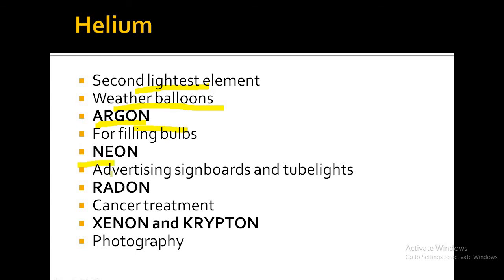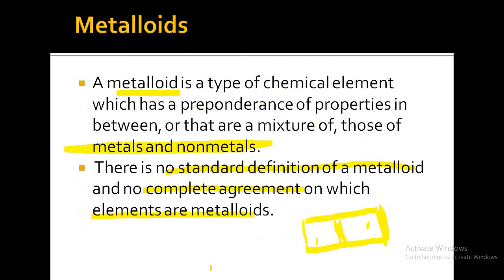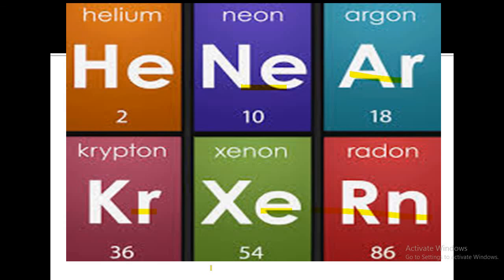Neon is used in advertising signboards and tube lights on roadsides. Radon is a radioactive inert element used in cancer treatment. Xenon and krypton are inert elements used in photography. Your homework is to write down the uses of all the metalloids we discussed and of the inert elements. Thank you everyone.